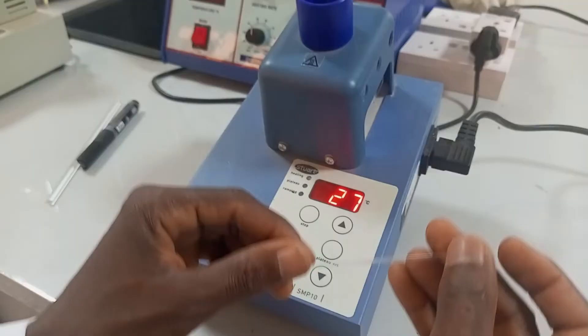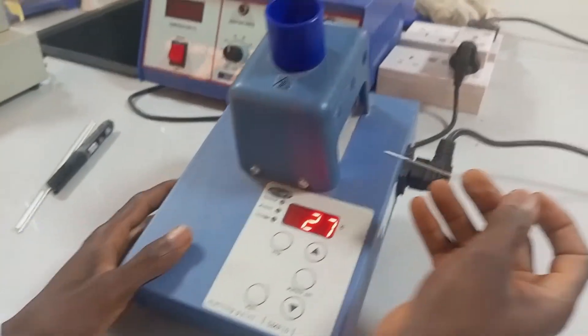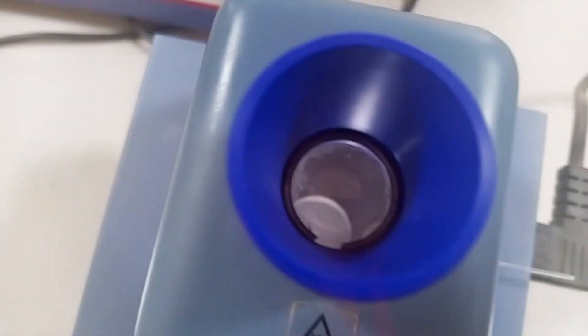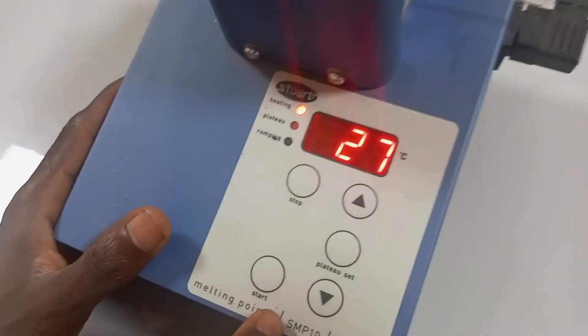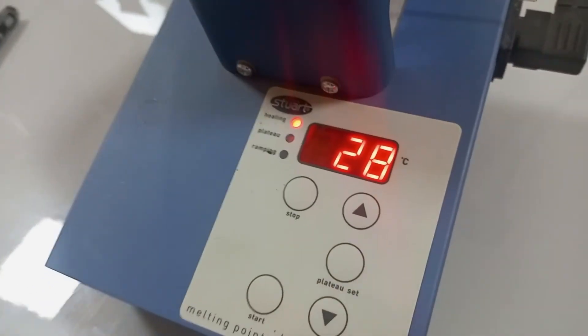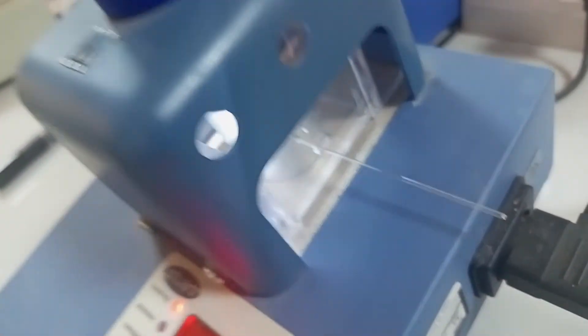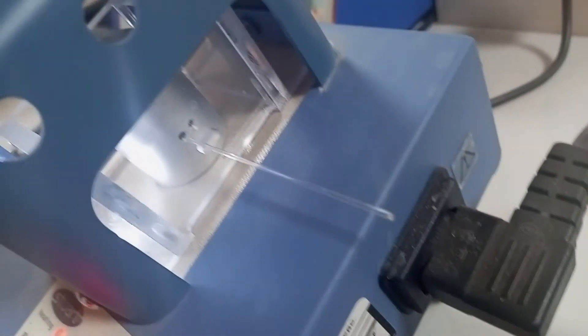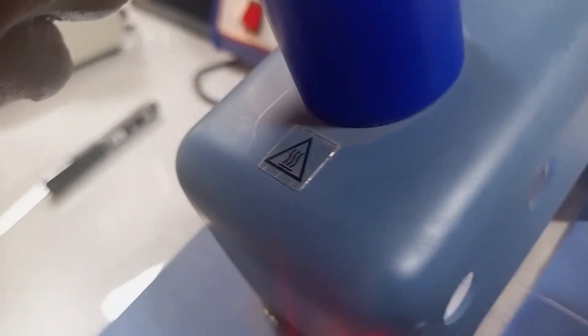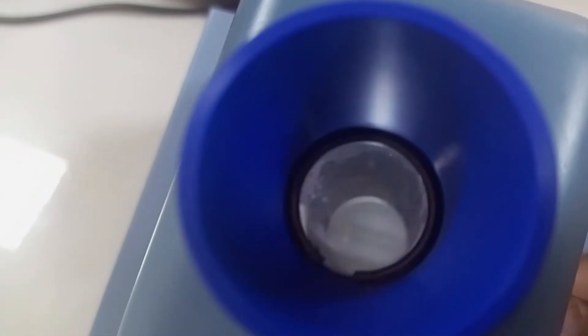Then, the next thing is to load the capillary tube, press the start button. You can see the temperature is increasing. While the temperature is increasing, you focus. You need to focus inside through the eyepiece to check when the substance will melt.